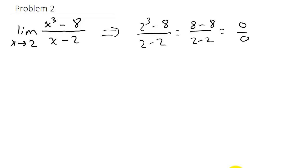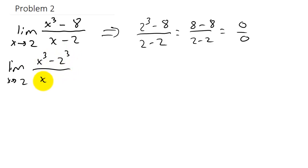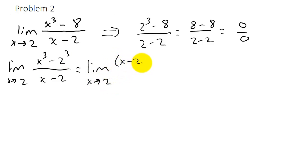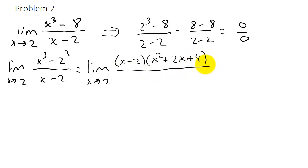We can factor the numerator. The limit as x goes to 2 — x cubed minus 8 is the difference of two cubes, so we can write that as x cubed minus 2 cubed. That factors into x minus 2 times x squared plus 2x plus 4, all over x minus 2. The x minus 2's cancel.